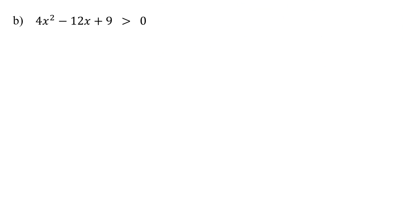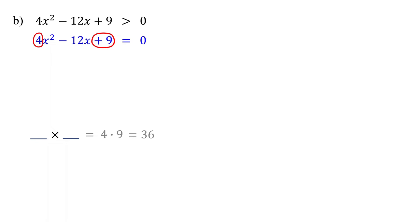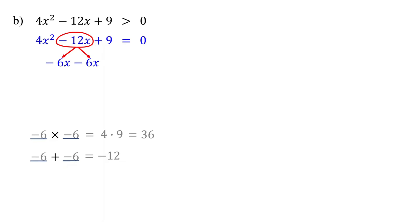Let's see that with our second example. First, change the quadratic inequality to an equation. Then, find the solution to the quadratic equation. Let's use the factoring method for this one too. Since the leading coefficient is different from 1, we will use the AC method. Find two numbers that multiply to give the product of 4 and 9, which is 36, and at the same time, add up to negative 12. Negative 6 times negative 6 gives us 36. When we add them, we get negative 12. Now split the middle term using these two numbers. If we add these terms back together, we get the original negative 12x, so we are not changing the value of the equation.